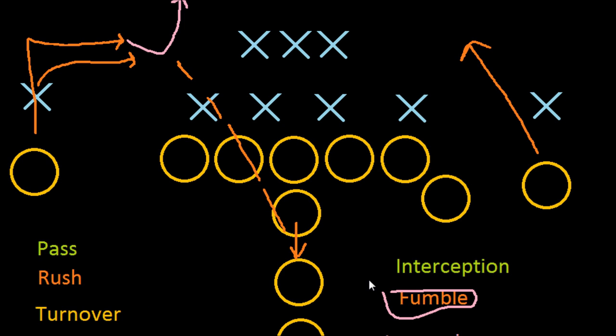To recap: an interception is when the defense catches a pass thrown by the quarterback, and a fumble is when the offense drops the ball and the defense recovers it — taking the ball over for themselves.